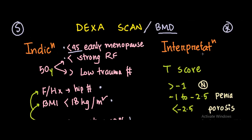What are the interpretations? We calculate the T-score or Z-score from the DEXA scan. If the T-score is more than minus one, that is normal. If the T-score is between minus one and minus two point five, that means osteopenia. And if the T-score is less than minus two point five — for example, minus three or minus four — that means osteoporosis.